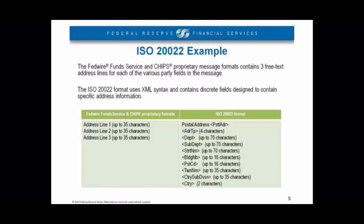Likewise, the ACH systems in the U.S. — so the Fed ACH and EPN systems — use the NACHA format. The ISO 20022 format, however, is a global format and it could accommodate both wire and ACH systems, so it contains fields that would be relevant on all payment systems.